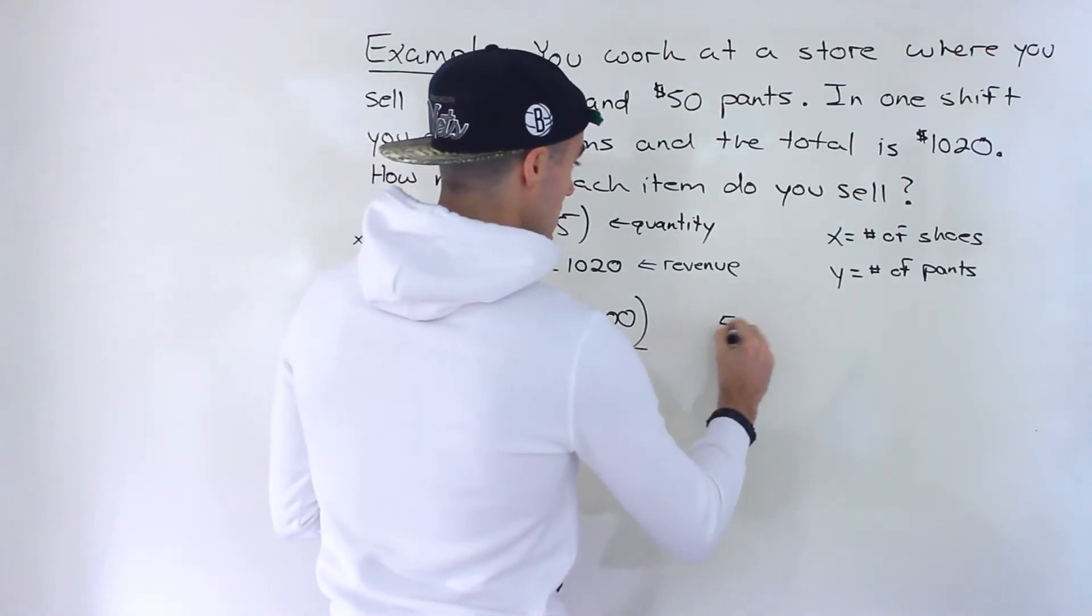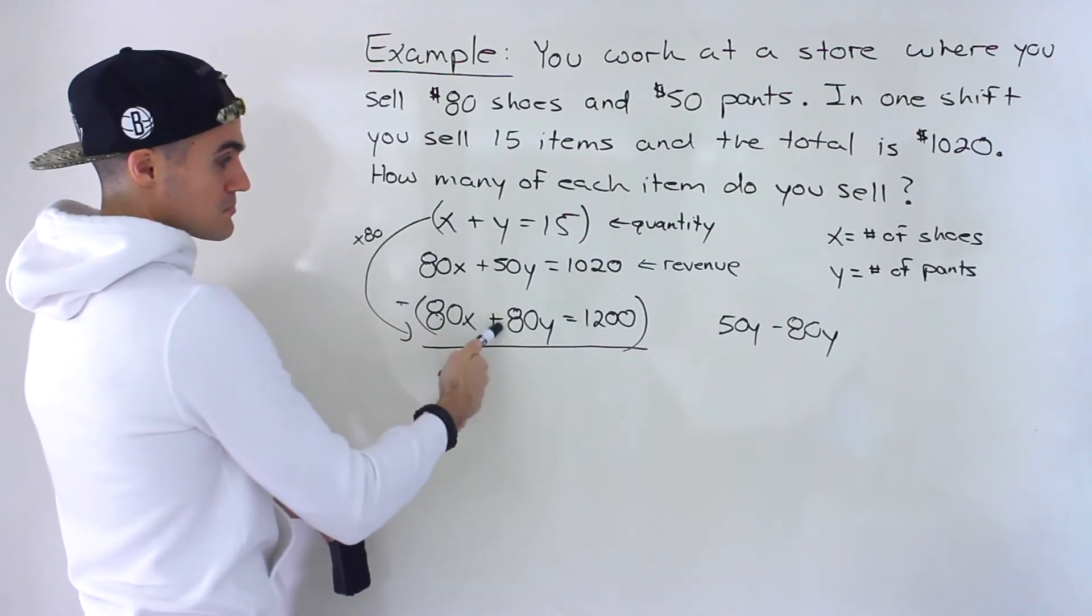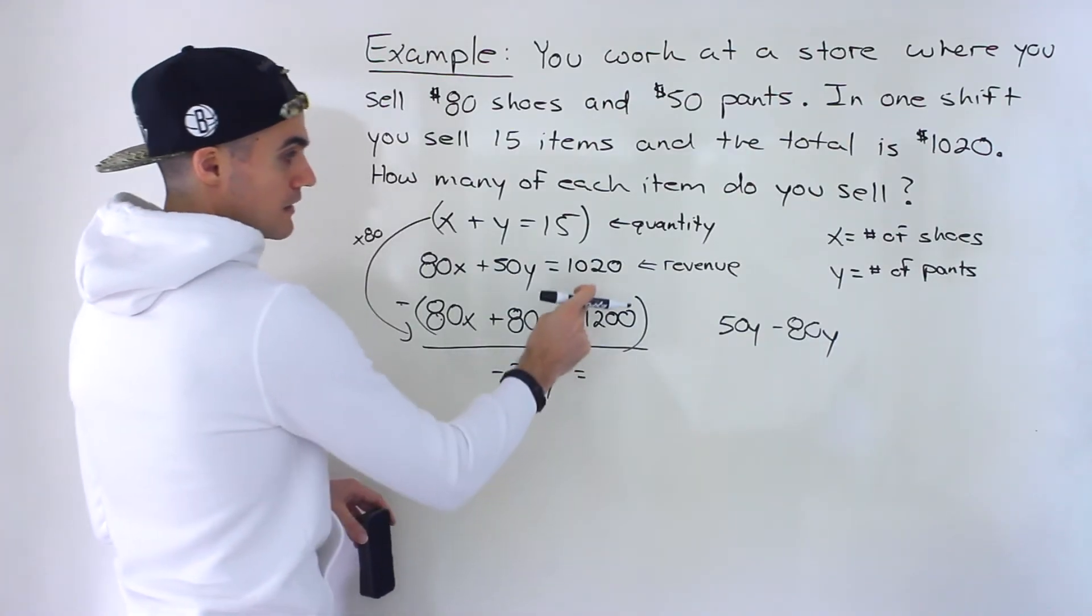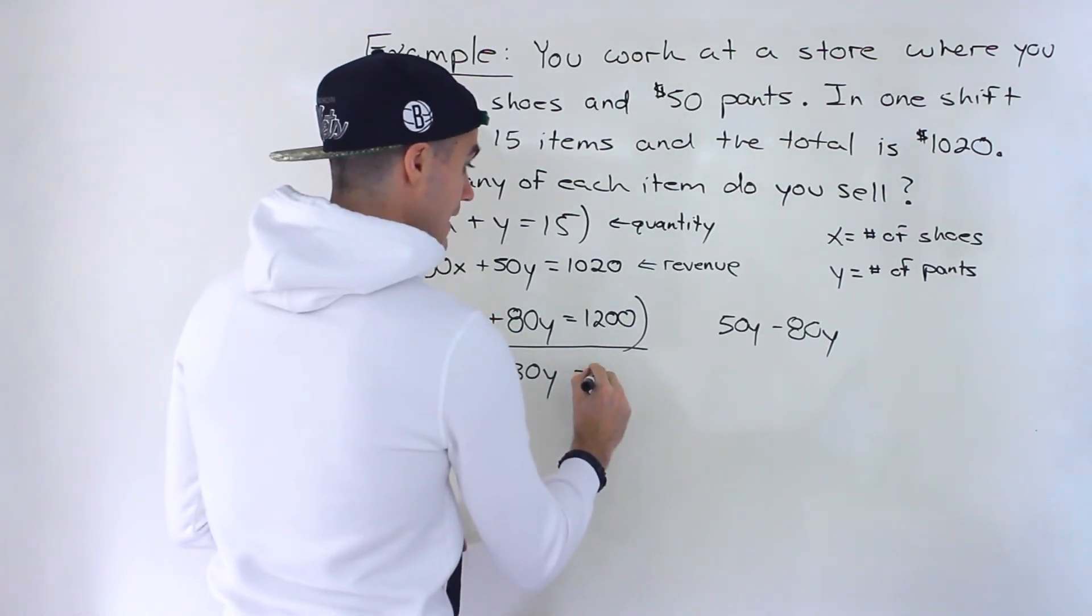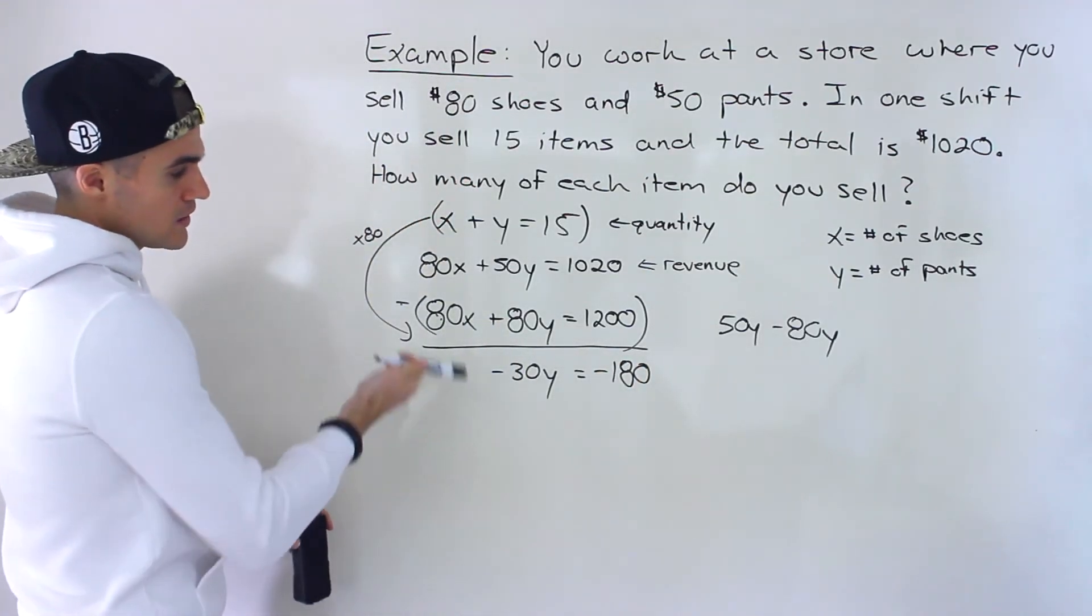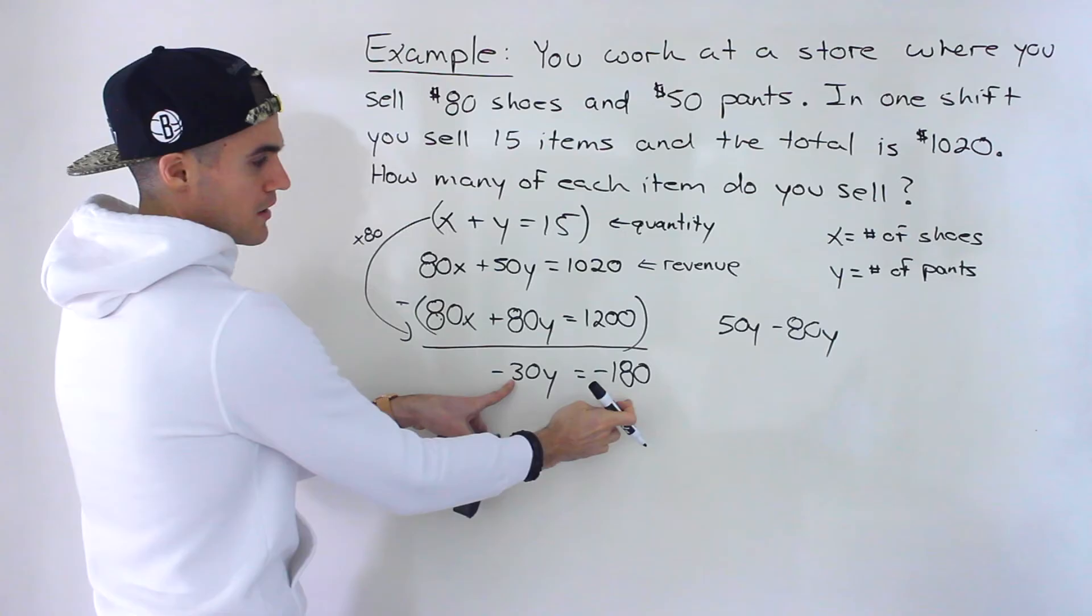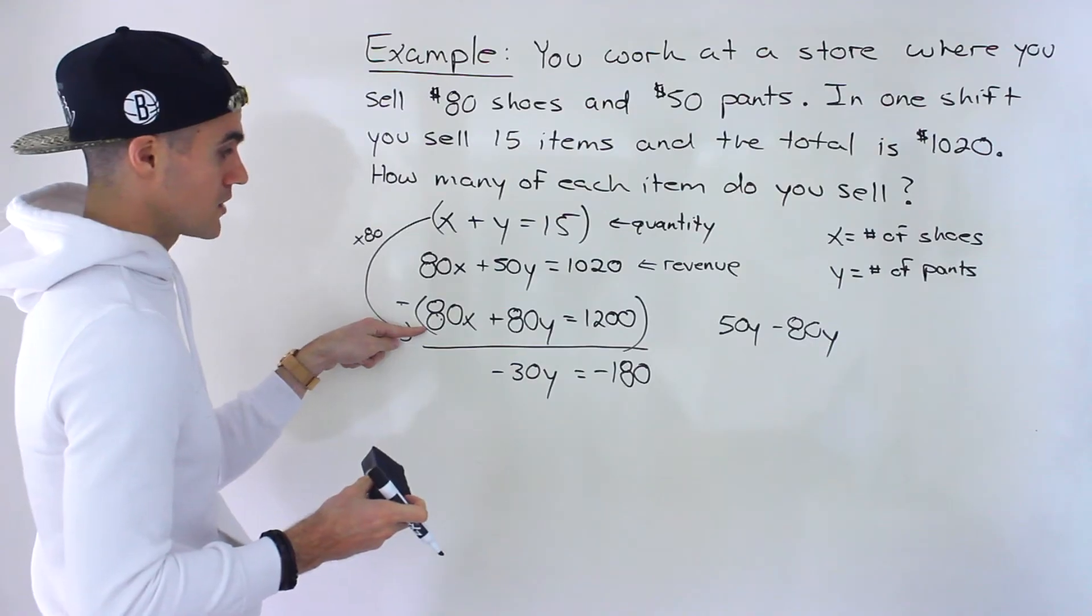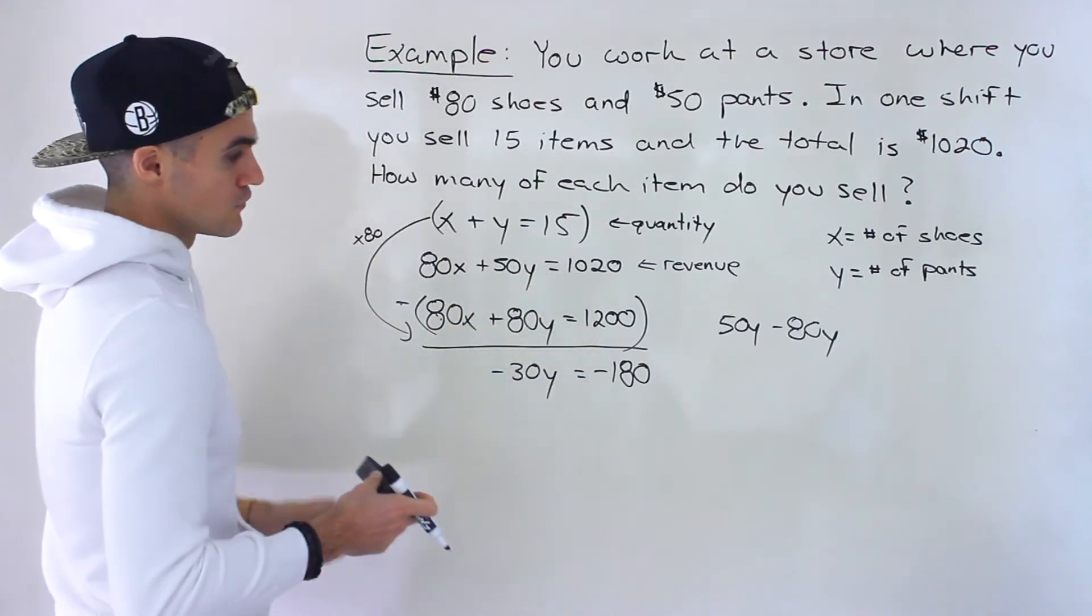Then we have 50y. Let's do this on the side. So 50y minus 80y, 50 minus positive 80, which would give us negative 30y over here. Then we have 1,020 minus 1,200, which would give us negative 180. Another way you could do is you could take this minus that, and then this minus that, this minus that, so then both of these would be positive. But usually what you're doing is you're taking the top and subtracting the bottom. So 50y minus 80y, negative 30y, 1,020 minus 1,200 is negative 180.